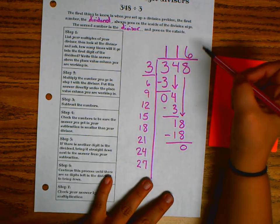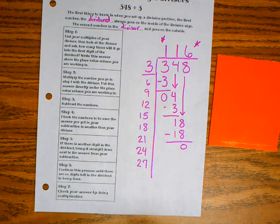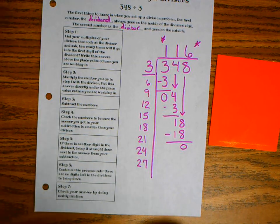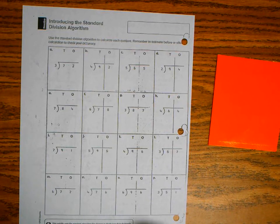The quotient is this number here at the top. The quotient is the answer to a division problem. So let's turn it over and let's do a couple more as an example.